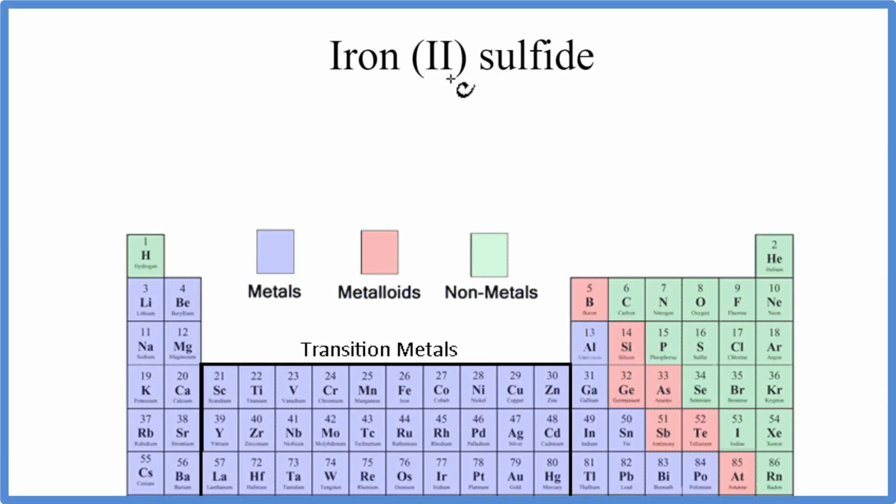To write the formula for iron (II) sulfide, we'll go to the periodic table. We look up iron, that's Fe, and then the sulfide, we're looking for sulfur, that's S.